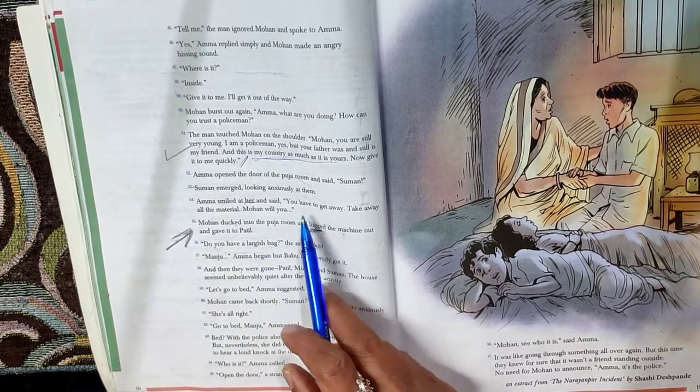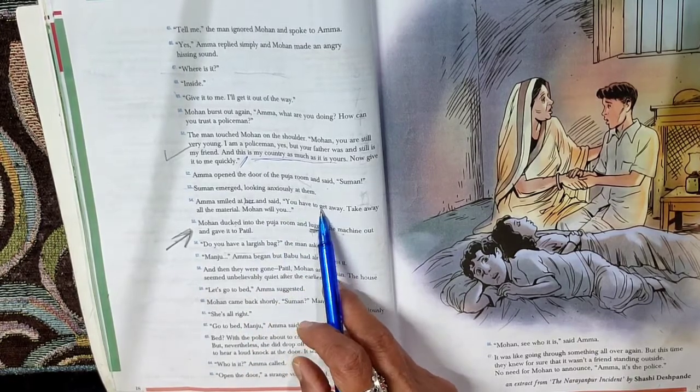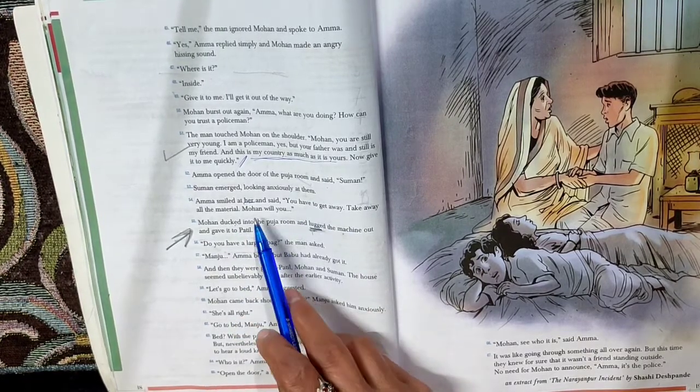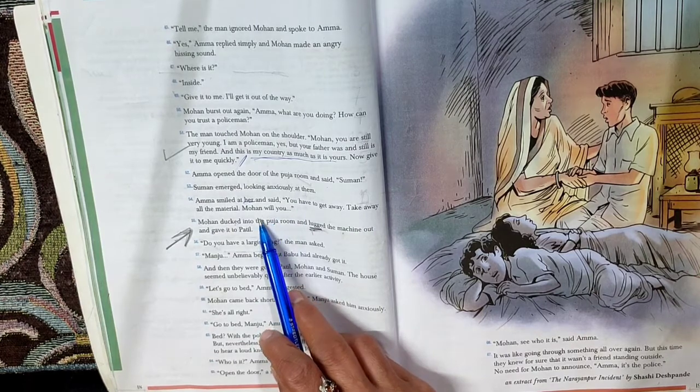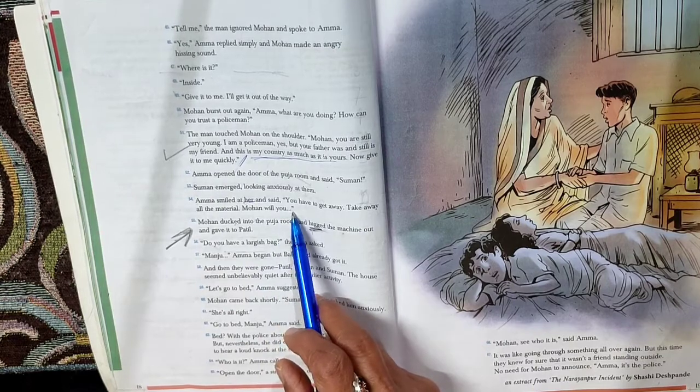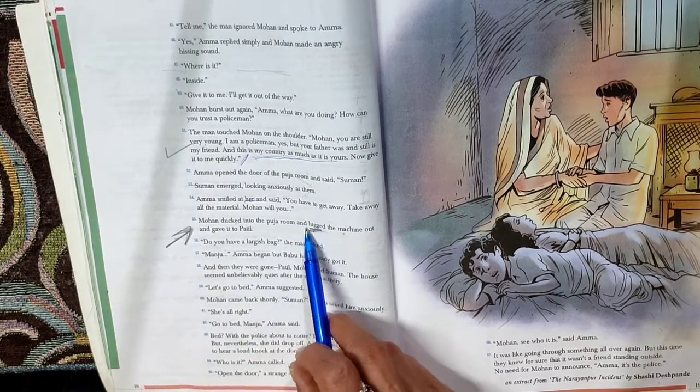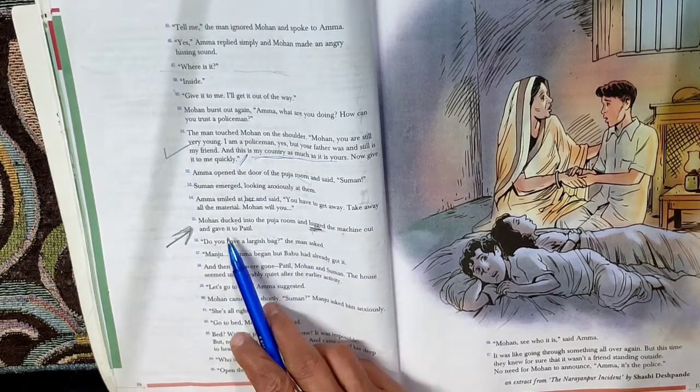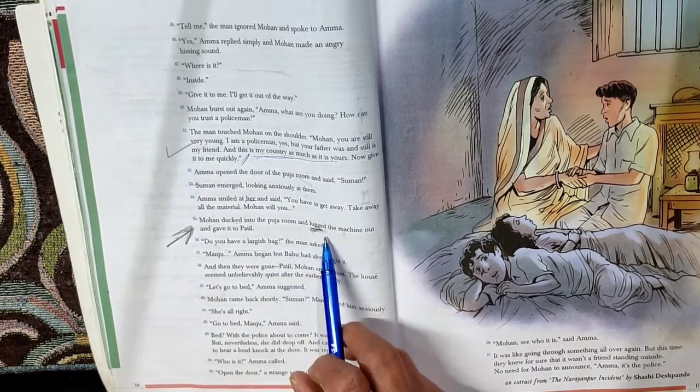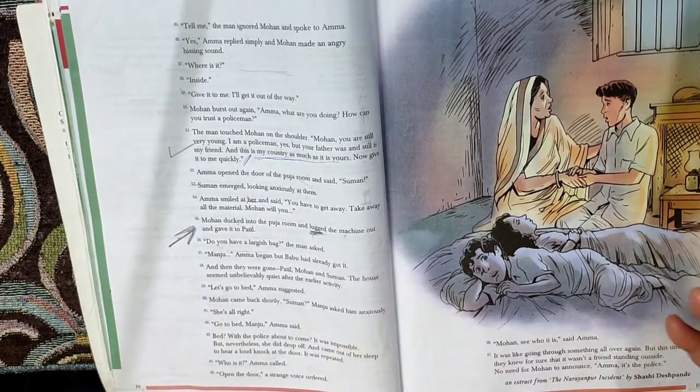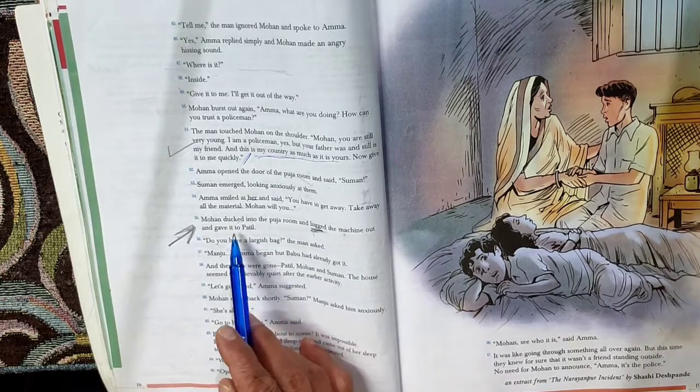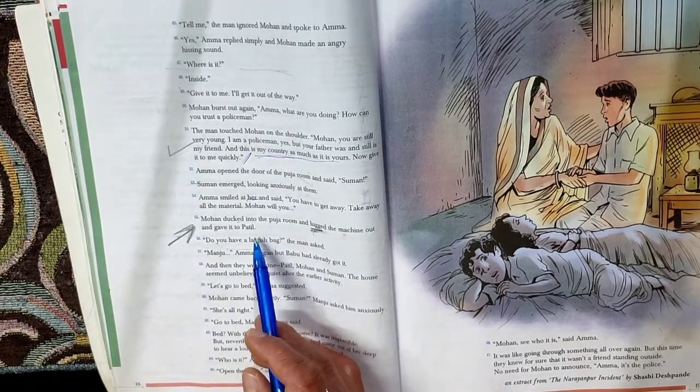So Mohan dug into the pooja room and lugged the machine out and gave it to Patel. So Mohan goes quietly into the pooja room, and lugged is moving with difficulty because it's a big cyclostyling machine, it's big in size. And he brings it out of the pooja room and gives it to Patel.